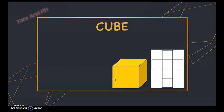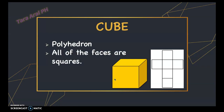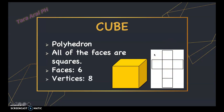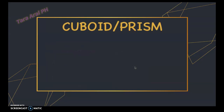Now let's describe a cube. A cube is a polyhedron and all of its faces are squares, so all sizes of the faces and edges are identical. We have six faces — this is the net of the cube — and it has eight vertices and twelve edges.